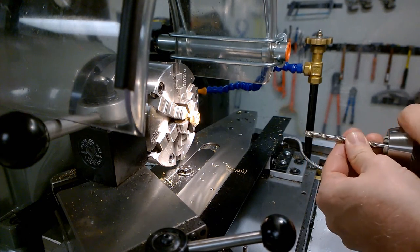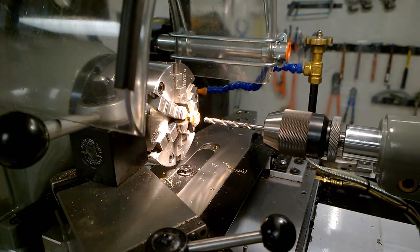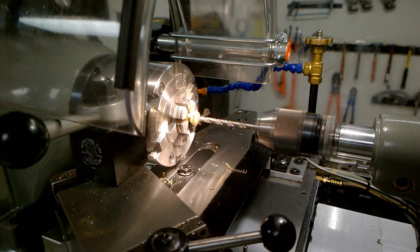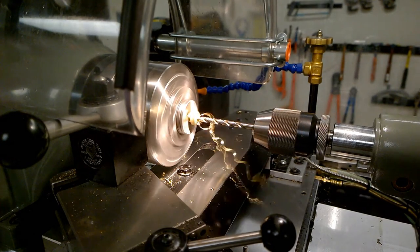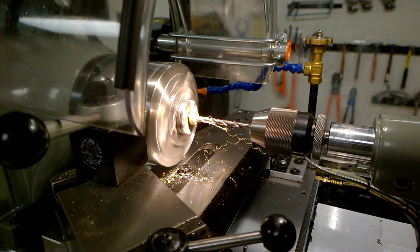I drill a hole through the bolt using a twist drill one size larger than the rod that I'm going to be inserting into the socket. I use a pecking motion when I'm drilling to break the chips.